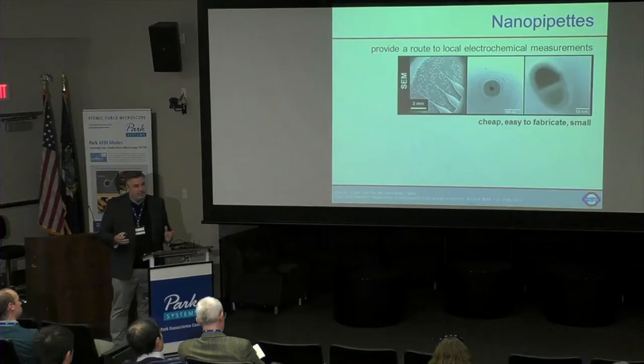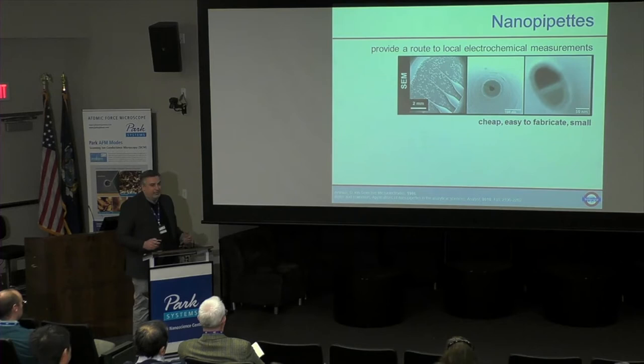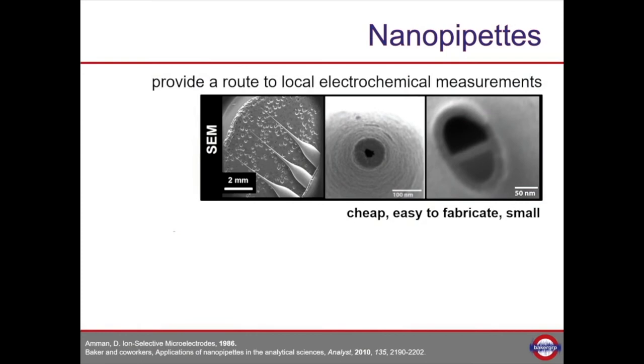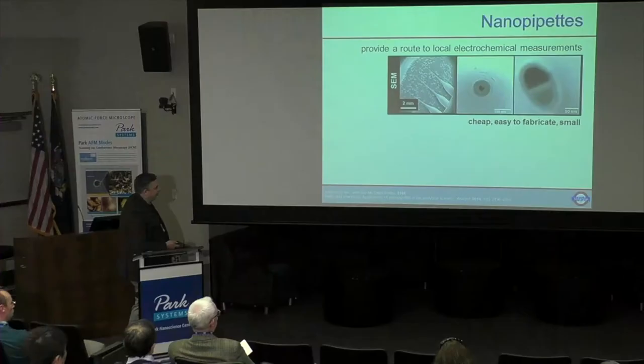Nanopipettes are what we're going to use as our imaging tool. For people who do AFM, this is a 50-cent probe instead of however much your high-resonant AFM cantilevers cost. This SEM shows three nanopipettes laying on their side, here's looking down the business end of one of the pipettes, and this is a dual barrel pipette. We use these quite a bit - in all the experiments today, we use pipettes where you can electrically address each barrel individually. The key is they're cheap, easy to fabricate, and small.